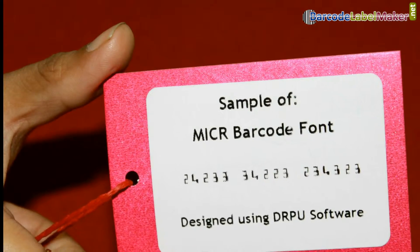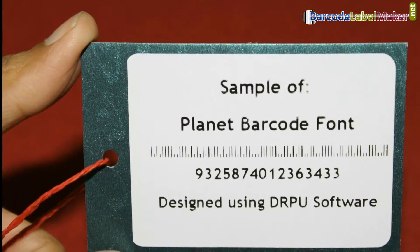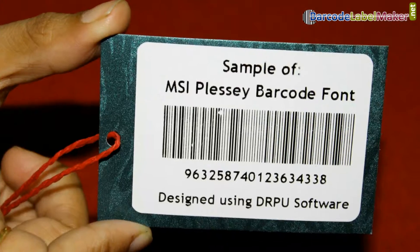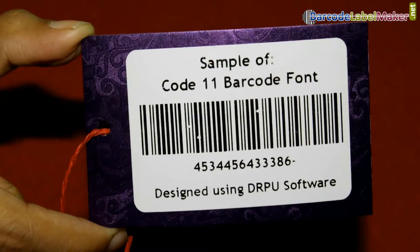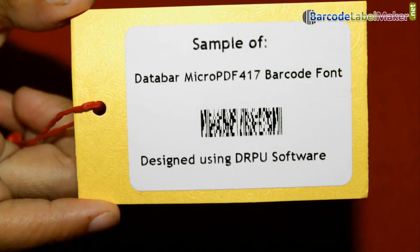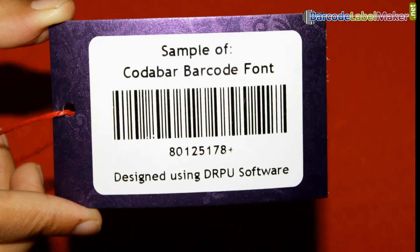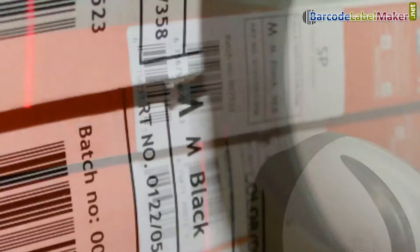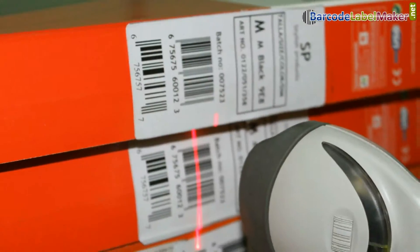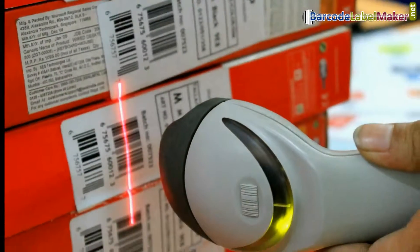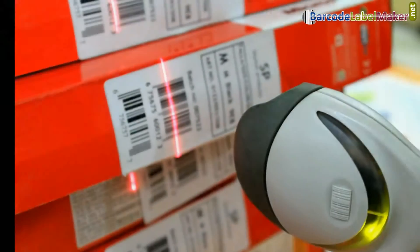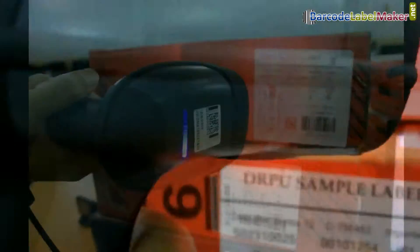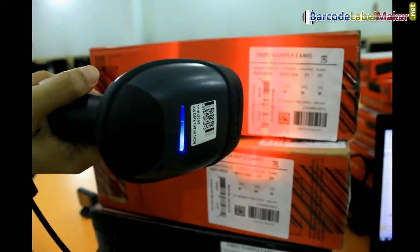In this video, we are going to discuss types of barcodes. Barcodes are used to track the information of the object to which it is attached. Barcodes are of two types: Linear and 2D.